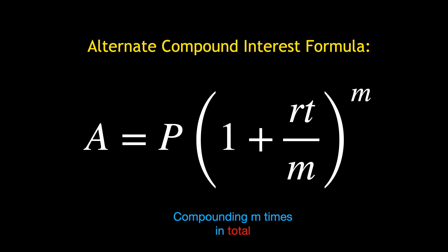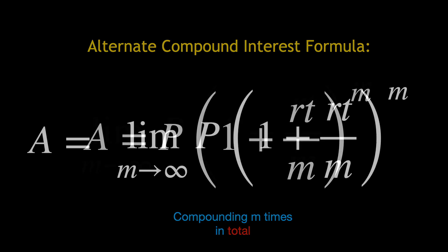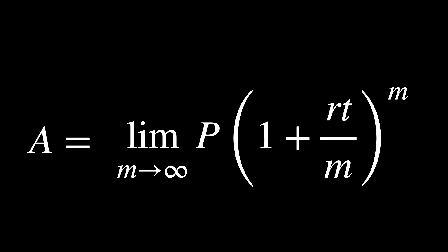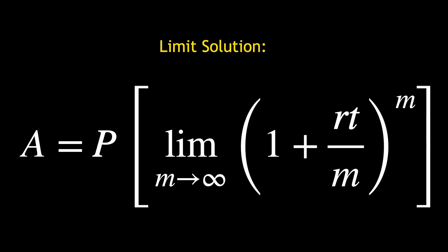This is simply an alternative to the standard form. To find the result from compounding continuously, we let m approach infinity. We'll call this the limit solution to the problem.